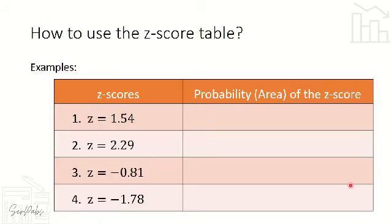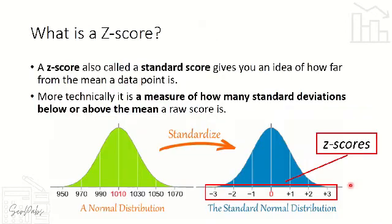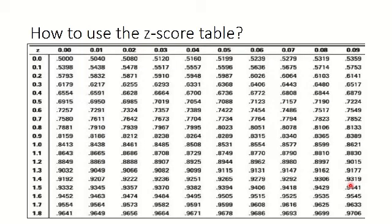Now let's look at how to use the z-score table. You can download a z-score table from the internet. The z-score table has z-scores in the first row and first column. For example, if you need the value for z = 0.32, you find 0.3 in the row and 0.02 in the column — that gives you 0.32.